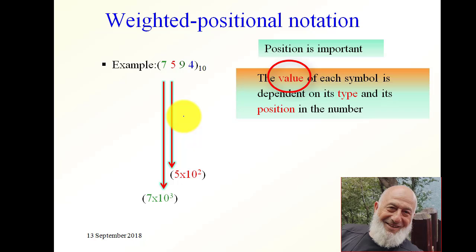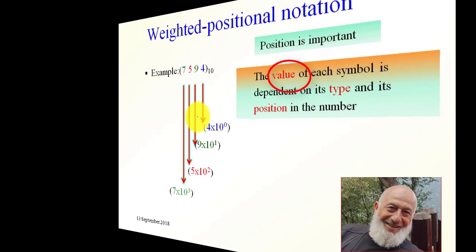Digit 9 has a value of 90, and digit 4 has a value of 4. So the position is important — each position has a weight.